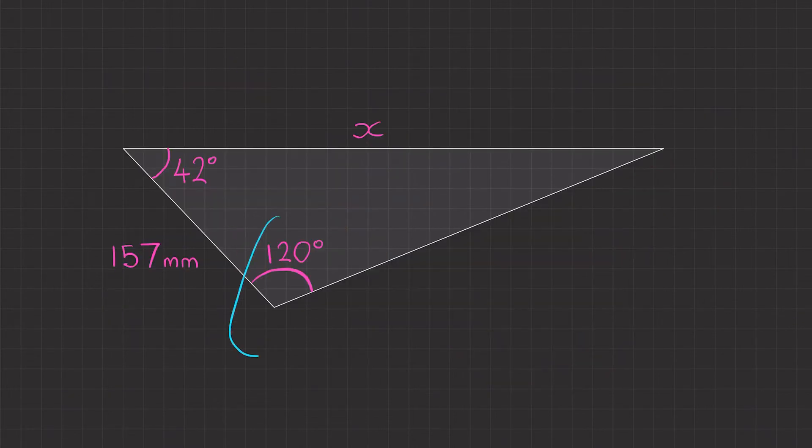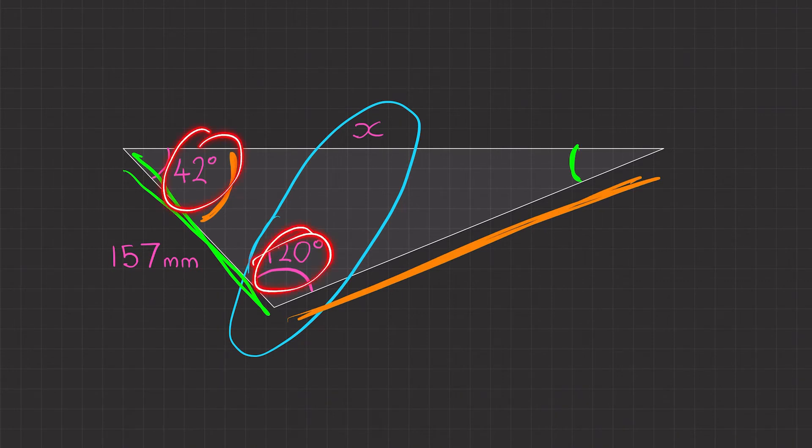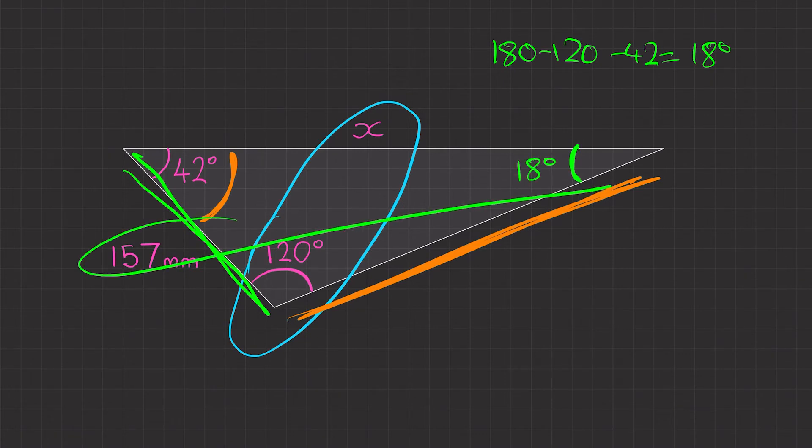This next one, we can see we've got a half pair here because we've got X and we've got 120. However, for this side, it's not got a corresponding angle and this angle doesn't have a corresponding side. But you've got to be careful with this one because we've been given two angles, 42 degrees and 120 degrees. That means we can find this third angle. To do that, it's 180, take away 120, take away 42, equals 18 degrees. So now we've actually got a second pair. So our first sort of half pair has a missing value and our second pair is complete. Therefore, we're going to be using the sine rule.